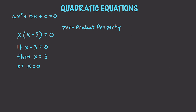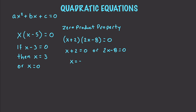Let's work through another one. Let's say we have (x plus 2) and (2x minus 8) is equal to zero. This works out to x plus 2 equals zero or 2x minus 8 equals zero, which means that x has a value of negative 2 or it has a value of 4.